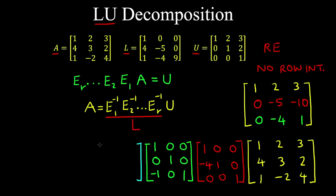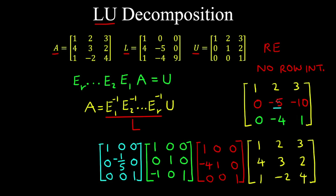The next matrix makes the leading entry in row 2 a 1, so we multiply by minus one-fifth. The 1s remain on the diagonal and we have 0s everywhere else. Row 2 by column 2: 0 times 2 is 0; minus one-fifth times minus 5 is 1; plus 0 times minus 4 is 0 — giving 1 on the diagonal. Then 0 times 3, minus one-fifth times minus 10, which is 2, plus 0 is 2.